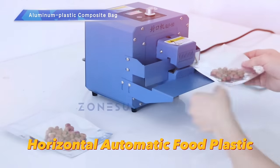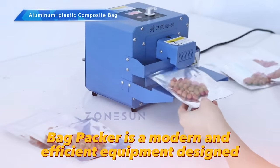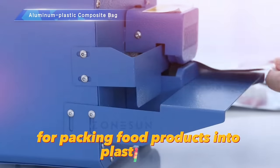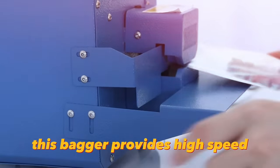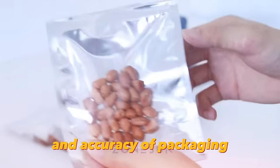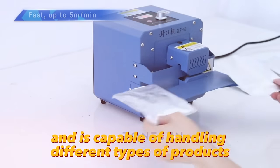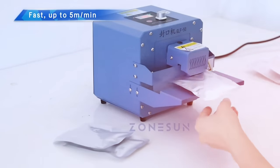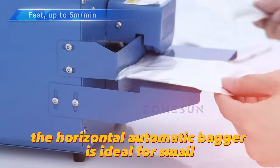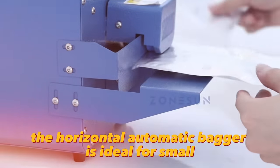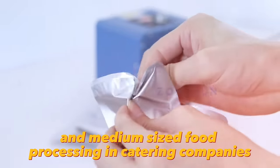Horizontal Automatic Food Plastic Bag Packer is modern and efficient equipment designed for packing food products into plastic bags. This bagger provides high speed and accuracy of packaging and is capable of handling different types of products and bag sizes. Due to its compactness and ease of use, the horizontal automatic bagger is ideal for small and medium-sized food processing and catering companies.